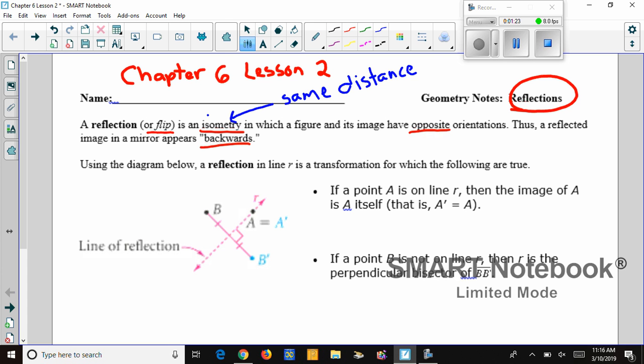Using the diagram below, a reflection in line R is a transformation for which the following are true. We have what's called line of reflection. That means that is the line I'm going to be flipping everything over. The thing to point out is point A is on the line of reflection.